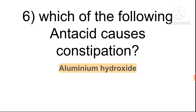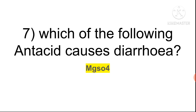Question six: which antacid causes constipation? It is aluminum hydroxide — aluminum causes constipation. Which antacid causes diarrhea? It is magnesium — magnesium sulfate causes diarrhea. So aluminum hydroxide causes constipation and magnesium causes diarrhea.